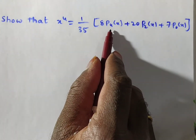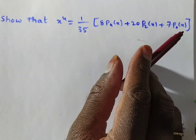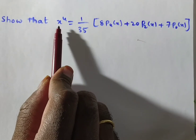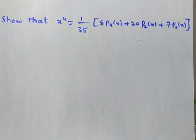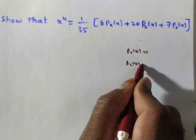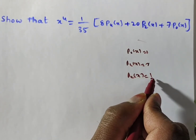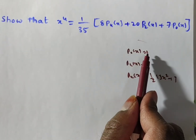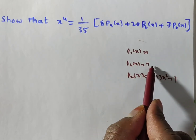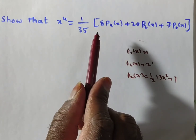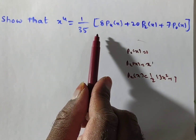Now, to prove this, you only need to know the values of P₄(x), P₂(x), and P₀(x). You need to know whether x⁴ contains P₅, P₃, P₂, or P₄. Remember: P₀(x) = 1 starts with x⁰, P₁(x) = x starts with x¹, P₂(x) starts with x², and P₄ starts with x⁴. So we do not need P₅, P₆, or P₇.